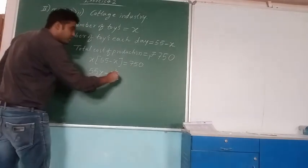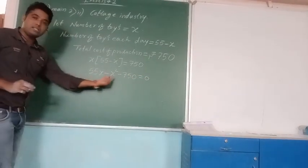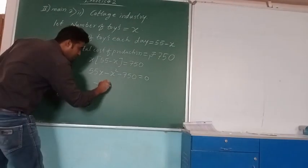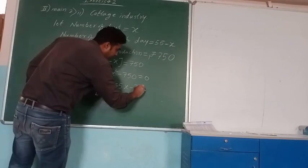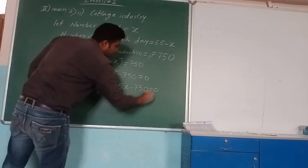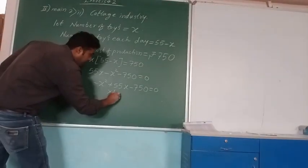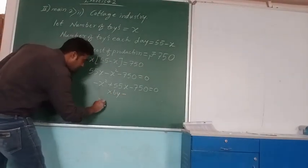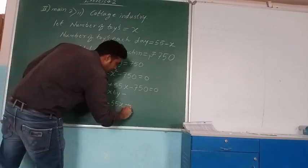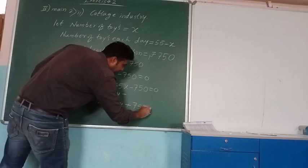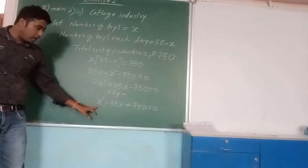Bringing 750 to the other side: 55x minus x squared minus 750 equals 0. Rearranging in standard form gives minus x squared plus 55x minus 750 equals 0. Multiplying through by minus one, we get x squared minus 55x plus 750 equals 0. This is the proper quadratic equation.